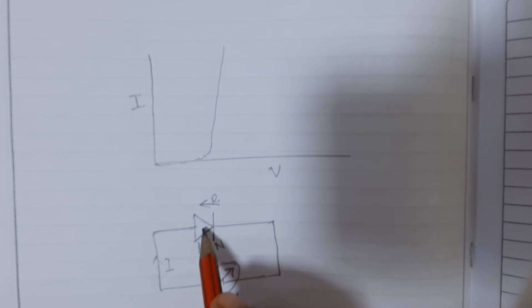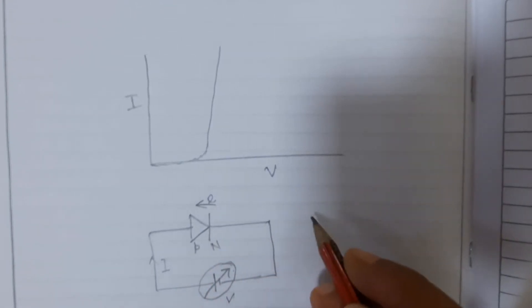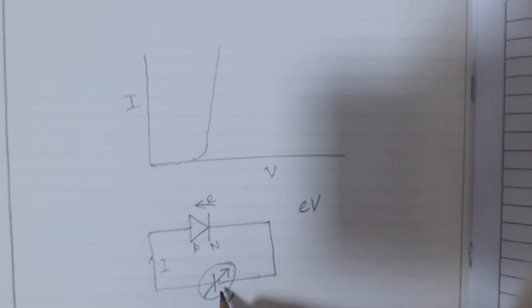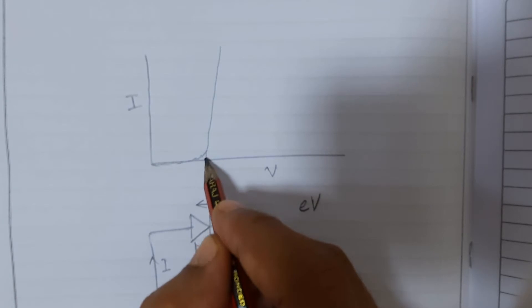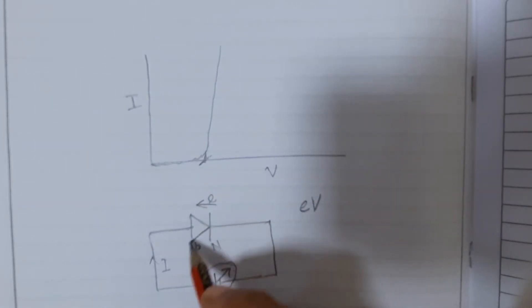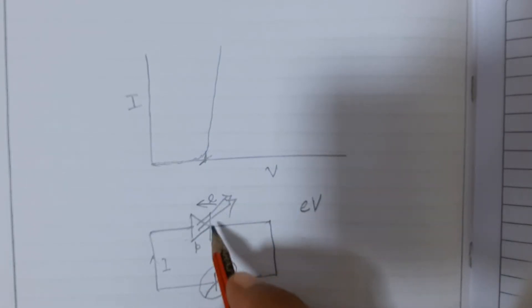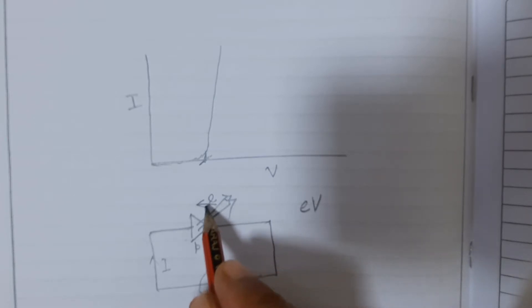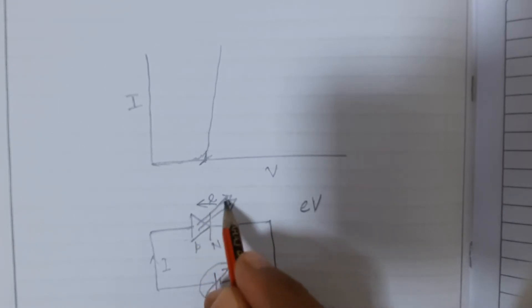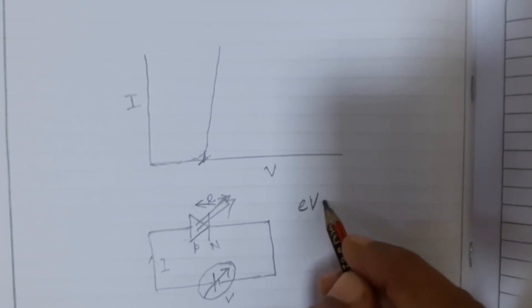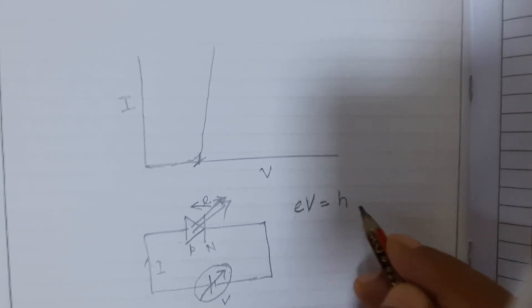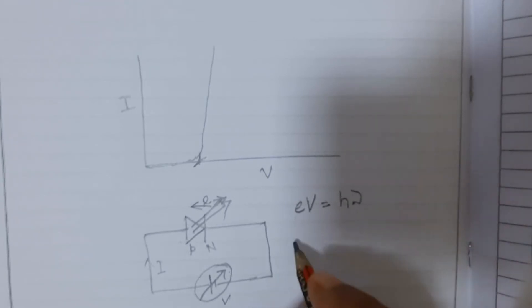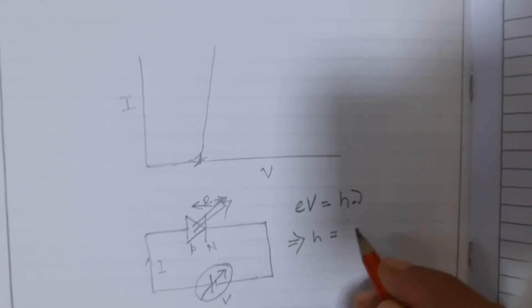As an electron comes in, it may meet a hole on the P side and release some energy. That amount of energy is eV, where V is the potential you have applied. We are looking for where the first current appears — meaning where you first see light coming out of the LED — so that voltage is the voltage at which the electron-hole combination releases energy as the light you see. The amount of light produced by an electron-hole pair, according to Planck, is equal to h·ν.